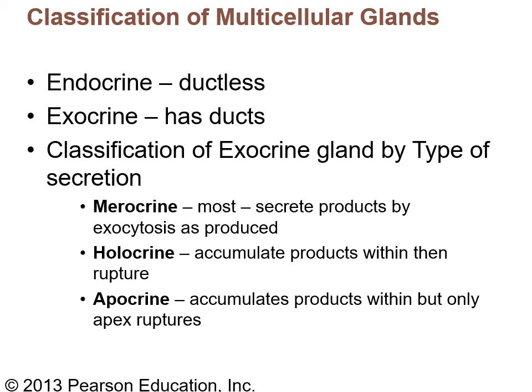Glands are another offshoot of epithelium because glands are made of epithelial tissue. There are two types: endocrine glands don't have ducts — we'll spend a whole chapter on the endocrine system in AMP2. Exocrine glands have ducts, and the cell types that make up those ducts are epithelial tissue.